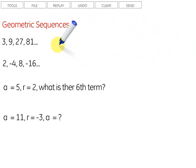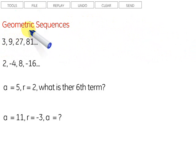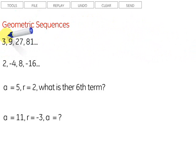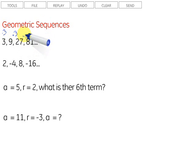So let's take a look at a sequence here. We have 3, 9, 27, 81. How are we getting from one term to the next? Well, 3 times 3 is 9. 9 times 3 is 27. And 27 times 3 is 81. So we're multiplying by 3 to get from one term to the next — times 3, times 3, times 3.